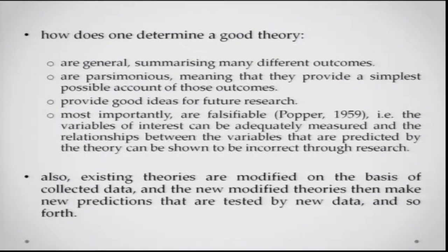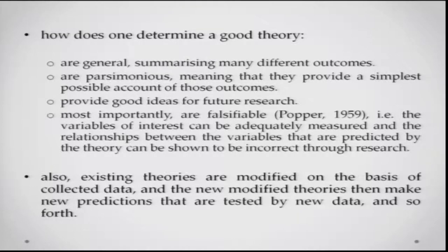How does one determine a good theory? One of the first things is that the theory should be broad enough to encompass many different outcomes related to a particular phenomenon. At the same time, the theory should be parsimonious — that is, it should have the simplest possible explanations. Also, a theory should be falsifiable. A theory which is not falsifiable is not really testable and, as Popper said, such theories are not good theories.